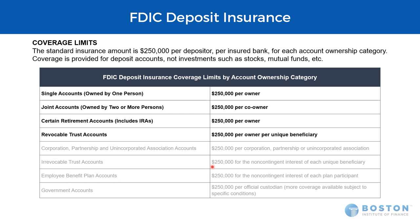Finally, revocable trust accounts work a little differently — this one is based on the number of unique beneficiaries. If I have a revocable trust account with one owner and three beneficiaries, the math is: one owner times three beneficiaries times $250,000 in FDIC insurance, so that account could have $750,000 of coverage.